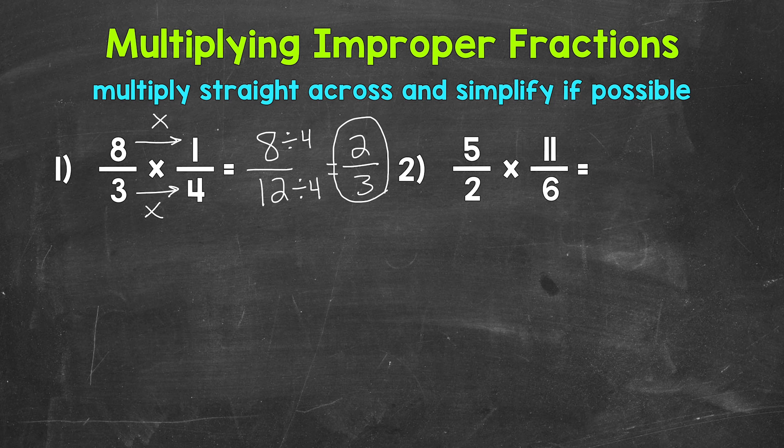Let's move on to number 2, where we have 5 halves times 11 sixths. Let's multiply straight across, starting with the numerators. 5 times 11 is 55. Now for the denominators. 2 times 6 is 12.